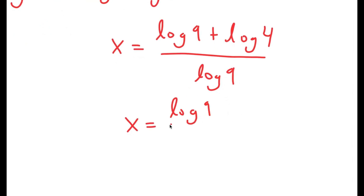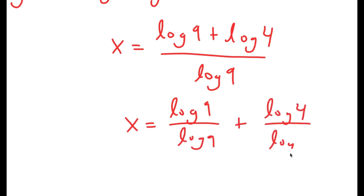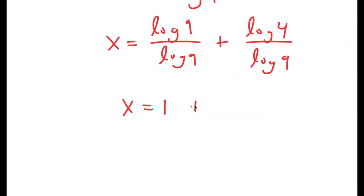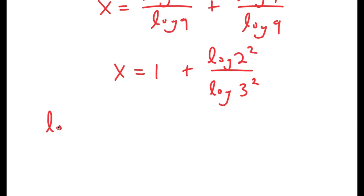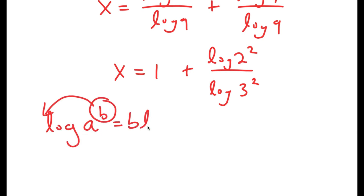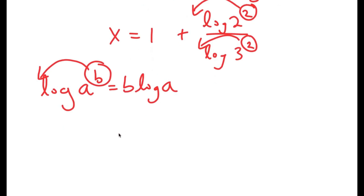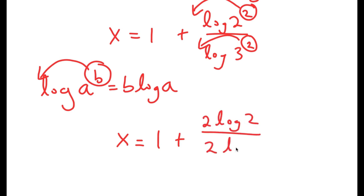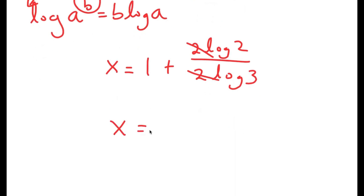This is equal to log 9 over log 9, plus log 4 over log 9, which is equal to 1 plus log of 2 squared over log of 3 squared. If I have something in the form log of a to the power of b, I can move this exponent to the front. So I can move 2 to the front in both the numerator and denominator, giving x is equal to 1 plus 2 times log 2 over 2 times log 3. From here, I can cancel out the two twos, so I get x equals 1 plus log 2 over log 3.